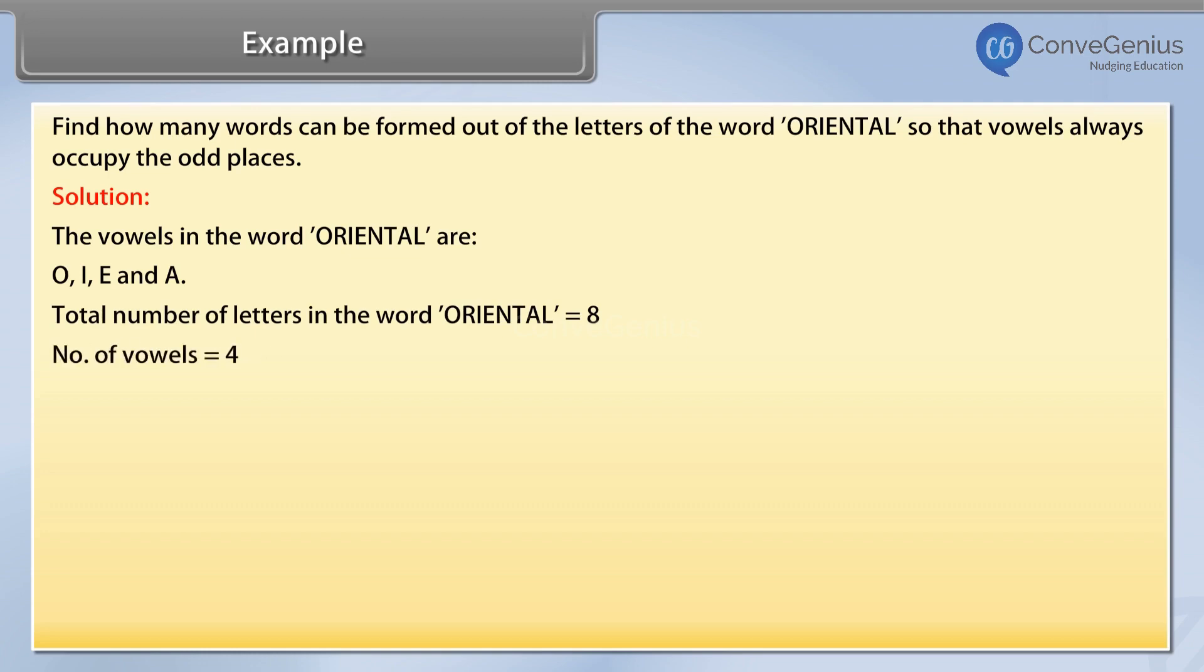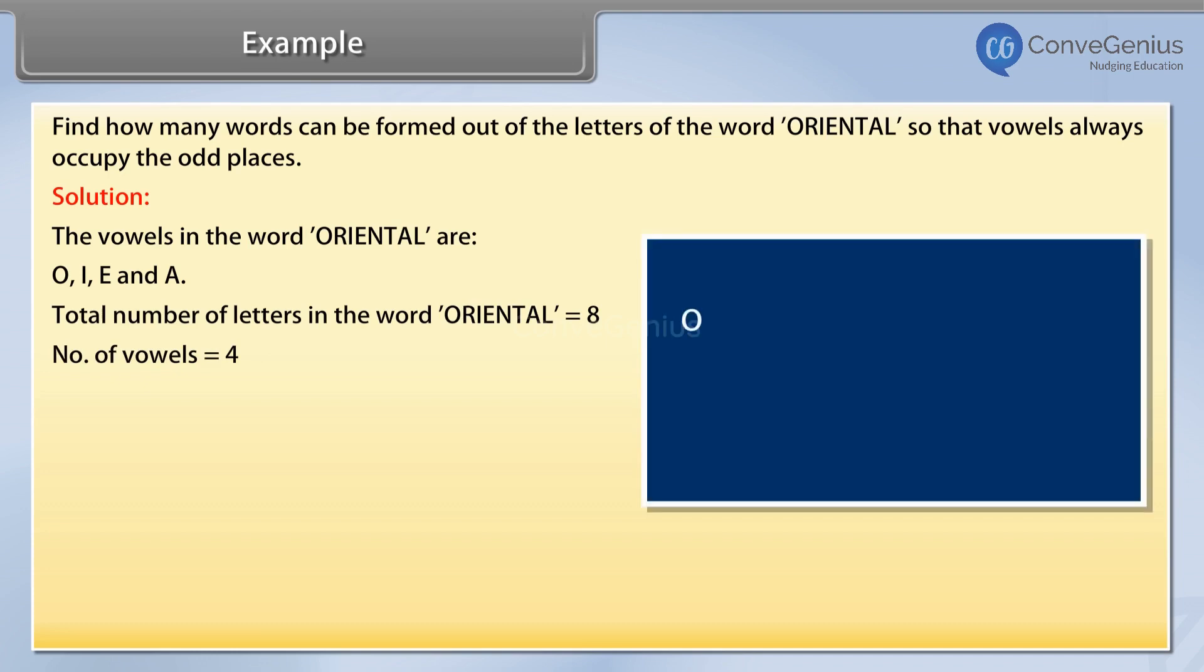Number of vowels is equal to 4: O, R, I, E, N, T, A, L in positions 1, 2, 3, 4, 5, 6, 7, 8. Vowels occupy odd places, that is 1, 3, 5 and 7.